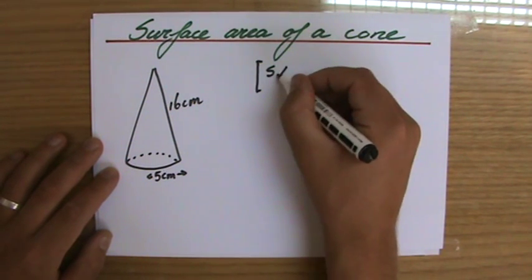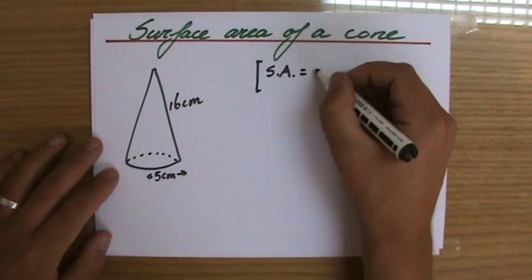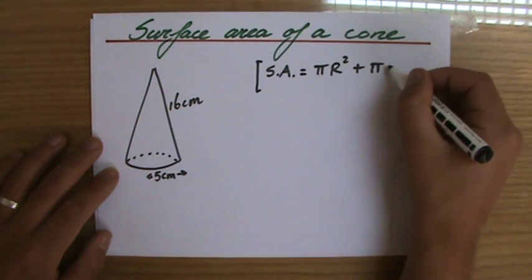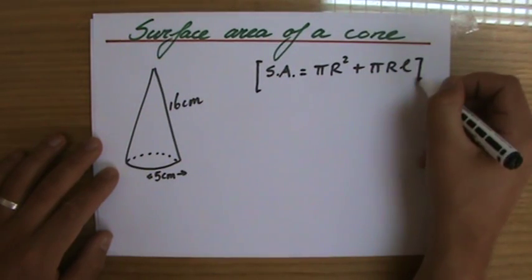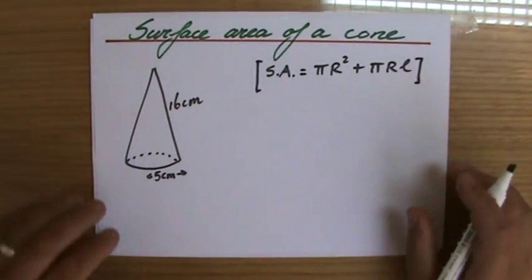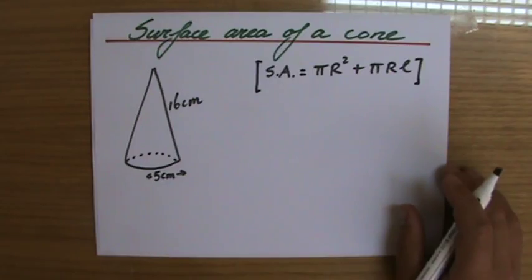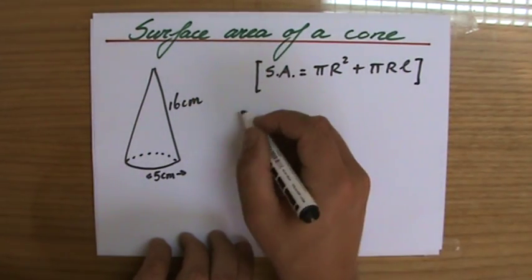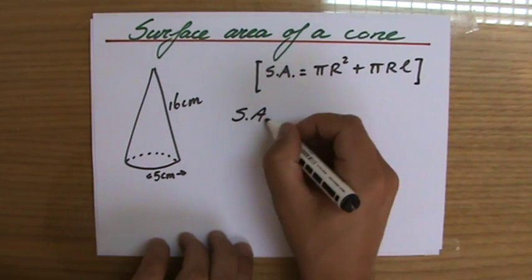So it will say the surface area of a cone can be found by doing pi r squared plus pi r L. So I've shown you in the previous video why.